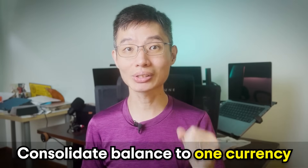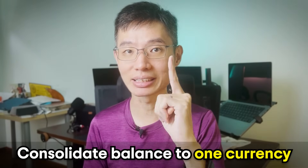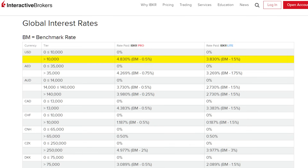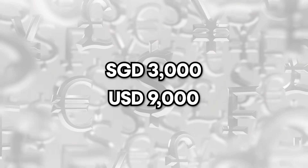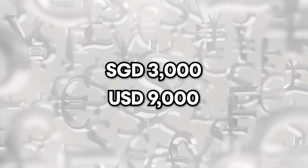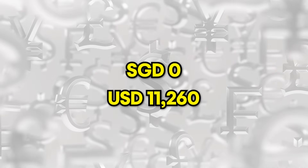You will also notice that interest is usually credited around the 5th of every month. Here are some tips and tricks to maximize the amount of interest you can earn. First, try to consolidate your account balance to just one currency, because you will only earn interest if the currency balance is above a certain amount. For example, if you have $3,000 Singapore dollars and $9,000 US dollars in your account and you aren't planning to use the Singapore dollars to buy stocks, just convert all of them into US dollars so you can earn interest on the amount above $10,000.